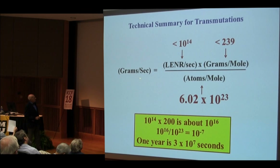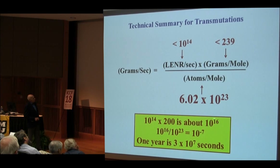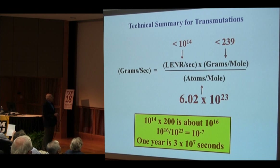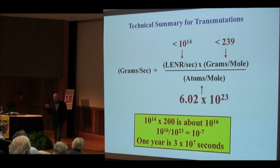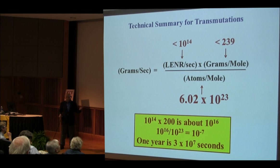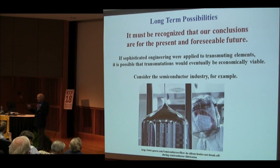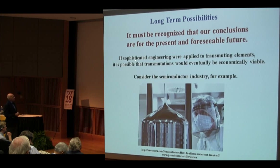The technical summary is this simple equation: grams per second equals LENR reactions per second times grams per mole divided by Avogadro's number. We saw values up to around 10 to the 14th in hertz. For Uranium-239, multiplying those together gives about 10^16 divided by 10^23, which is 10^-7 grams per second. In a year — 3×10^7 seconds — you could produce a gram if you have the maximum transmutation rate reported. It could well be that people find ways to increase the transmutation rate using large surface area materials as in catalysis, but for the foreseeable future it's going to be very difficult, and if it ever happens it will require sophisticated engineering.